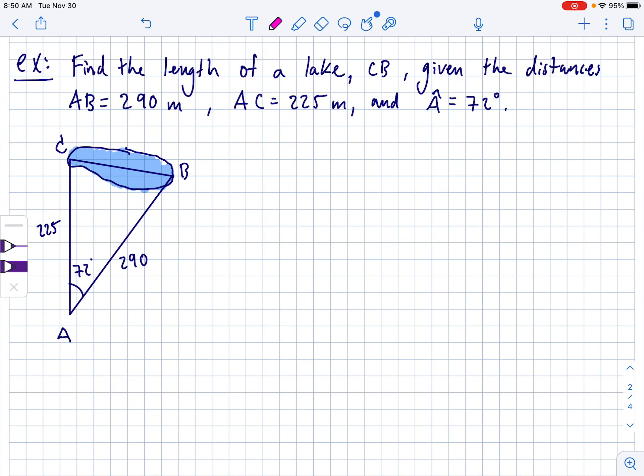Next one. Find the length of the lake, CB, given the distances AB equals 290, AC is 225, and angle A is 72. They did provide a diagram with this one. This is your classic angle sandwich. Look, side, angle, side. Angle's smashed between the two sides. So if I'm going to try to find CB, CB squared is going to be 225 squared plus 290 squared minus 2 times 225 times 290 times the cosine of 72. That's the angle between them.